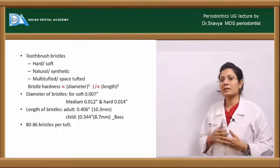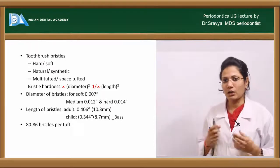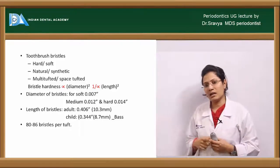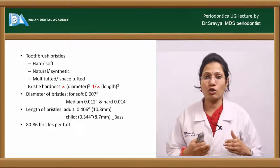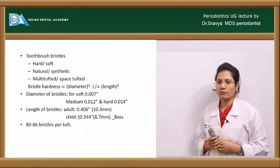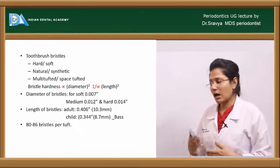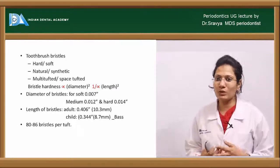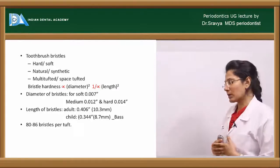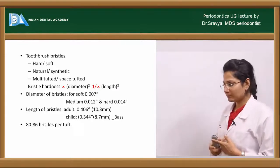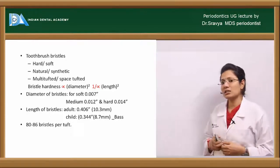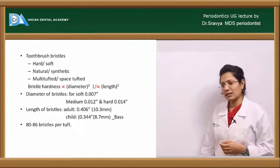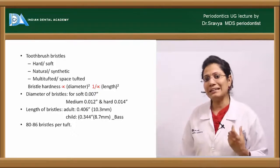Bristle hardness is directly proportional to the diameter of the bristles — if the diameter is more, the bristle is more stiff and hard. If the bristle length is longer, then bristle hardness is less. Soft brushes have a bristle diameter of about 0.007 inches, medium ones 0.012 inches, and hard toothbrushes 0.014 inches. Bristle length in an adult is about 0.406 inches and in a child about 0.344 inches, with each tuft having about 80 to 86 bristles.